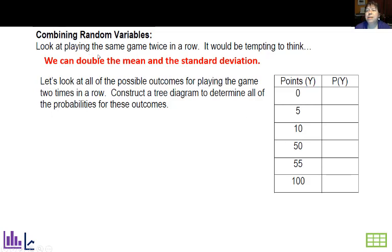Let's look at playing the same game twice in a row. You might say we'll just double the mean and double the standard deviation. Well, this is where it gets tricky, and it's easy to make a mistake and think you can just double things. Let me explain why. We're going to do a tree diagram of all the probabilities for these outcomes.